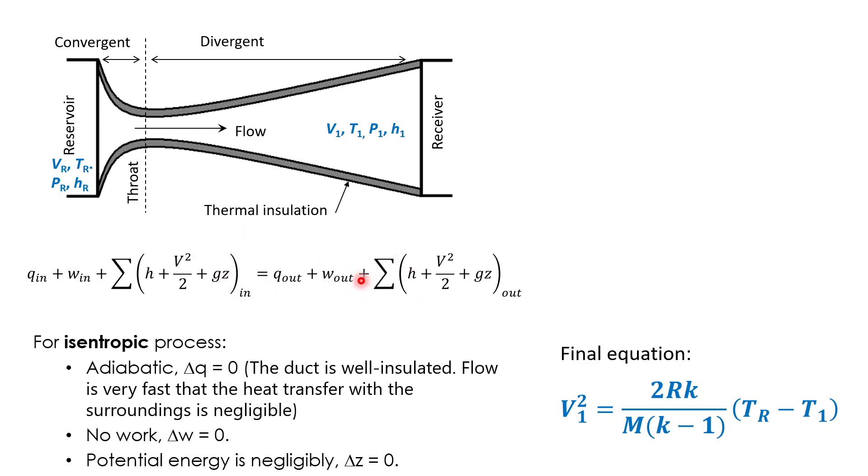Then we know that the processes are adiabatic. So Q equal to zero. There is no work, work equal to zero, and the potential energy is negligible. So this term is canceled, this term is canceled. We end up with a simple equation that gives us the energy balance relationship between the reservoir point to the point number one. And since we know by definition, at this stagnation state here, Vr equal to zero, so then the equation can be simplified into this form.